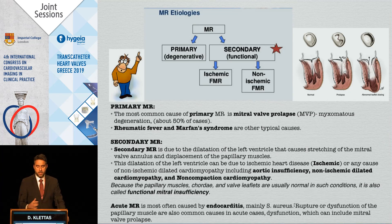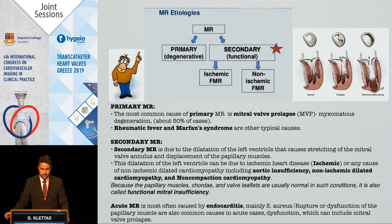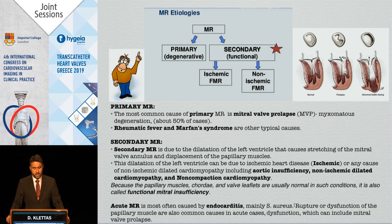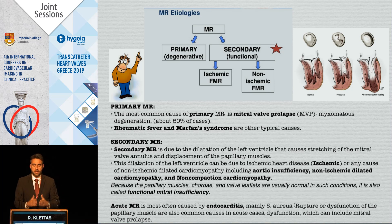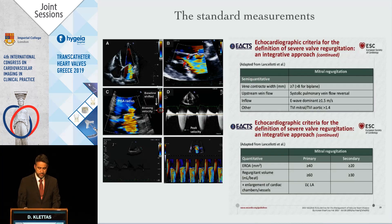Primary and secondary distinction is very important. The most important thing when we investigate the mitral valve is to see if there is a pathology in the leaflet. If it's an organic MR, as we call primary mitral regurgitation, the most common cause is mitral valve prolapse.